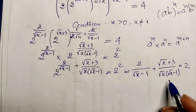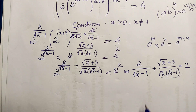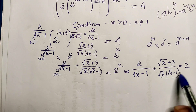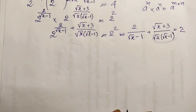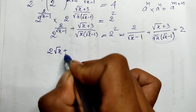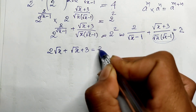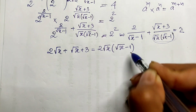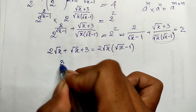Now I take the denominator, which is square root of h times (square root of h minus 1), and multiply through. So: 2 times square root of h plus (square root of h plus 3) equals 2 times square root of h times (square root of h minus 1).